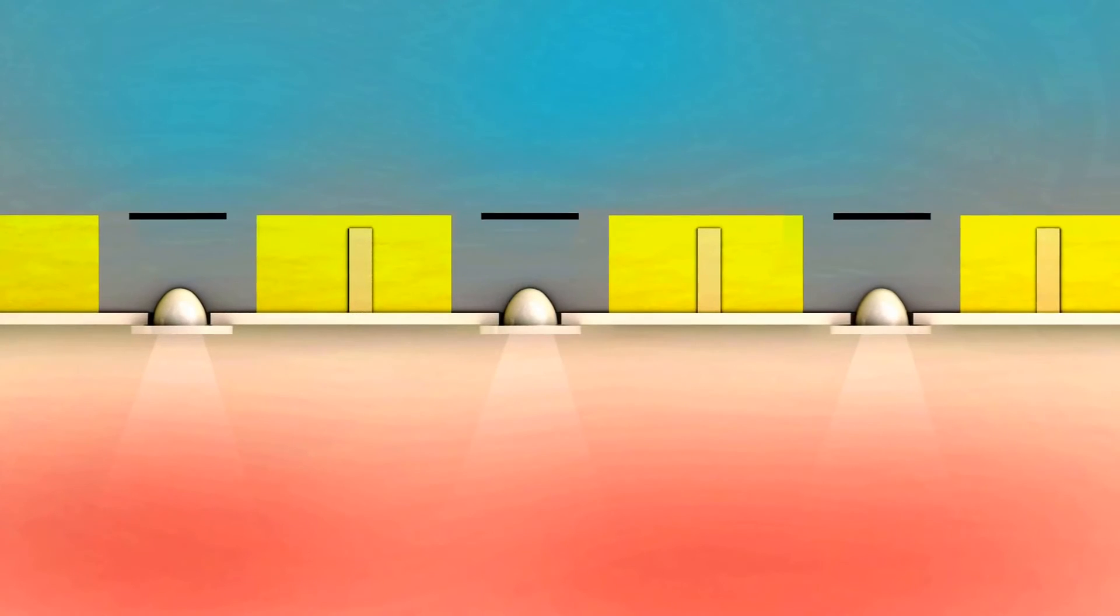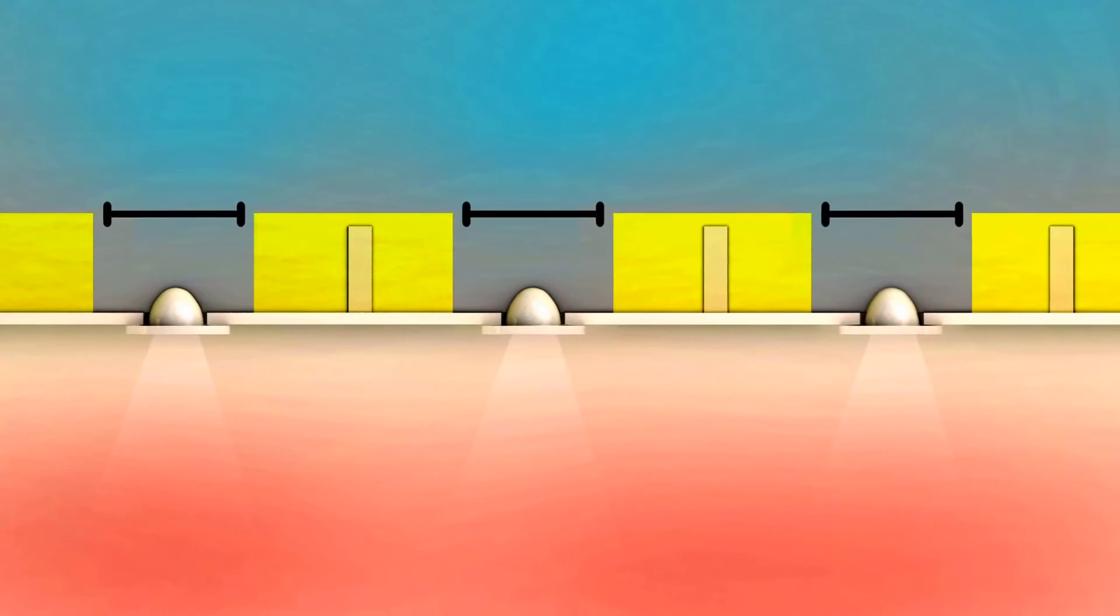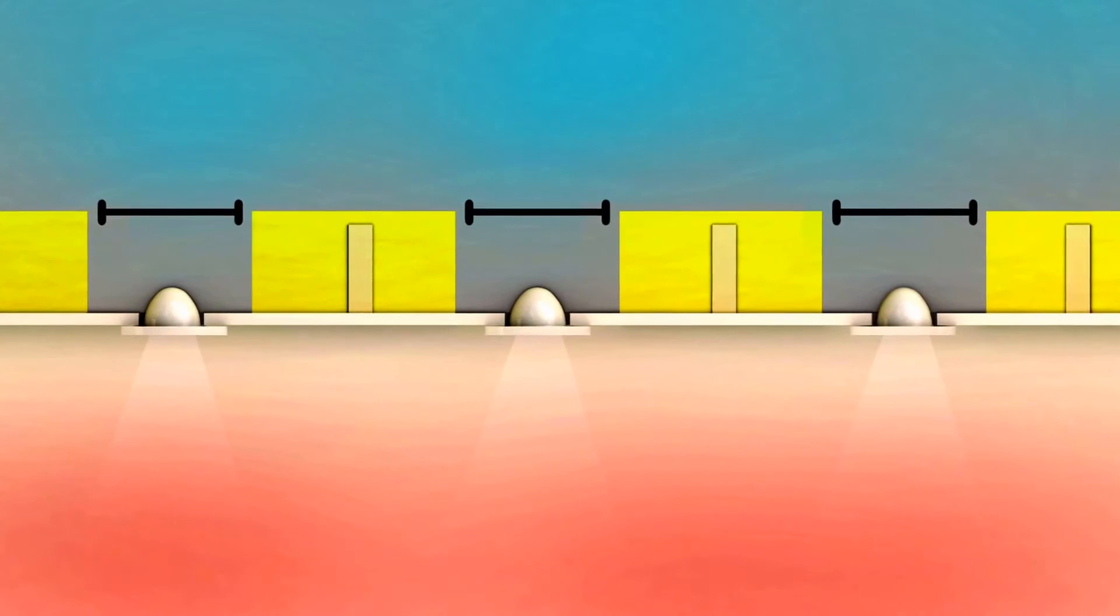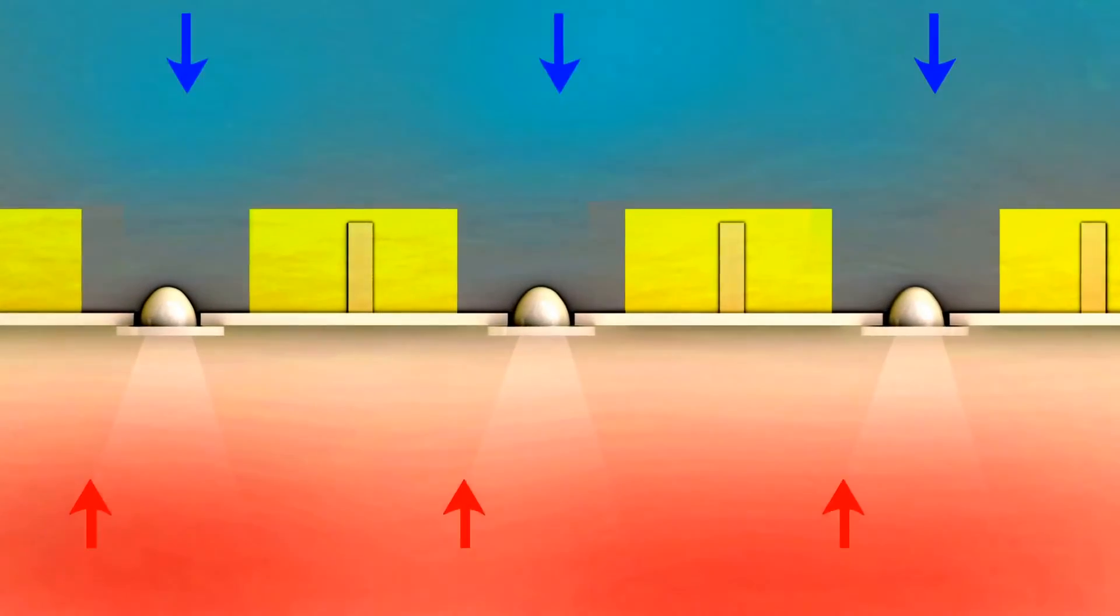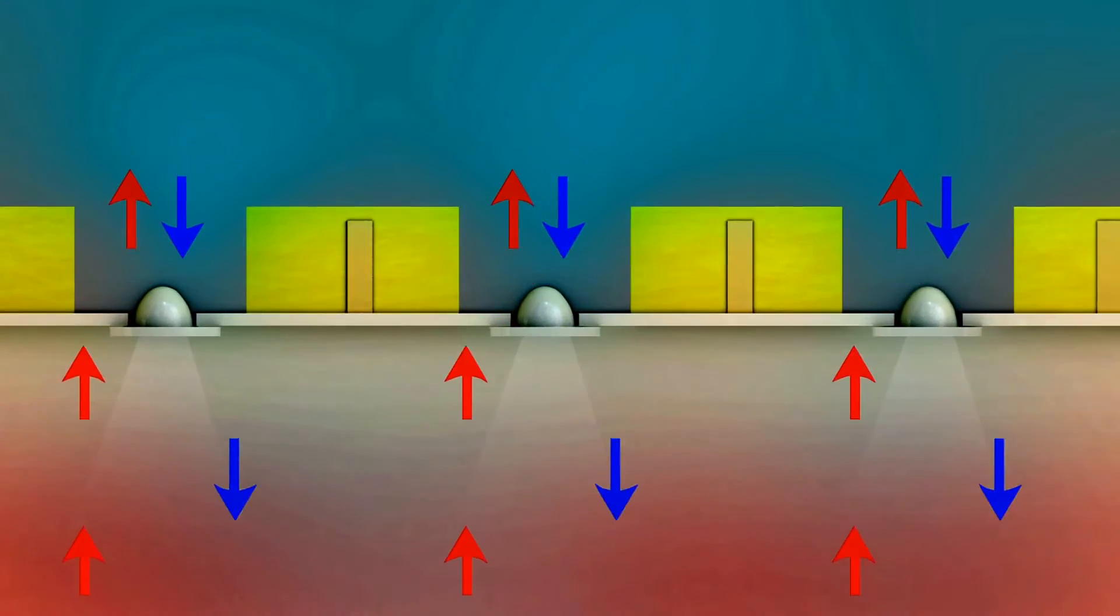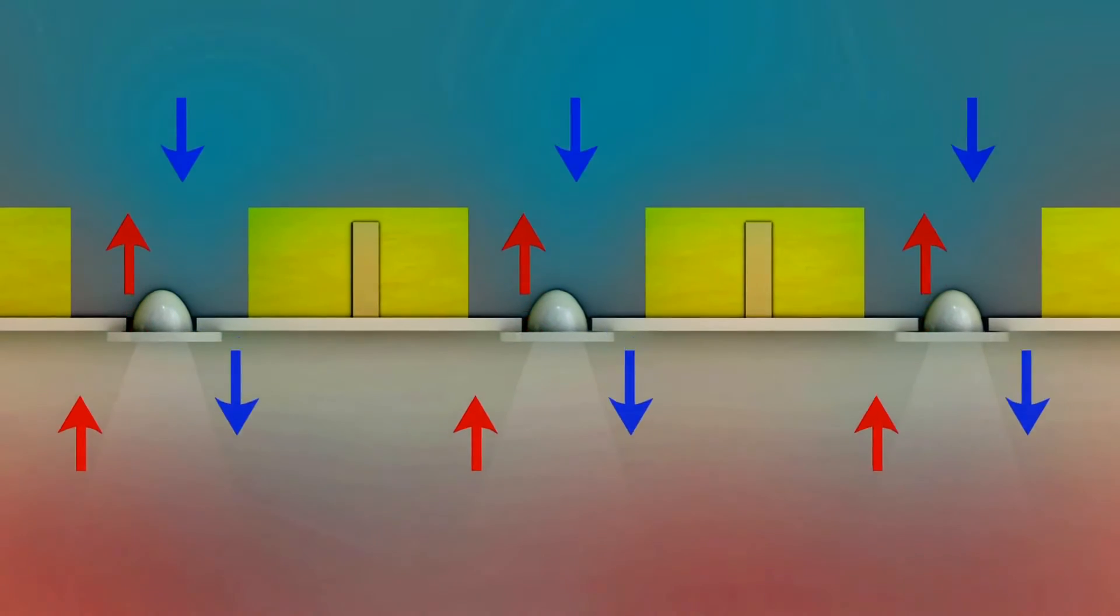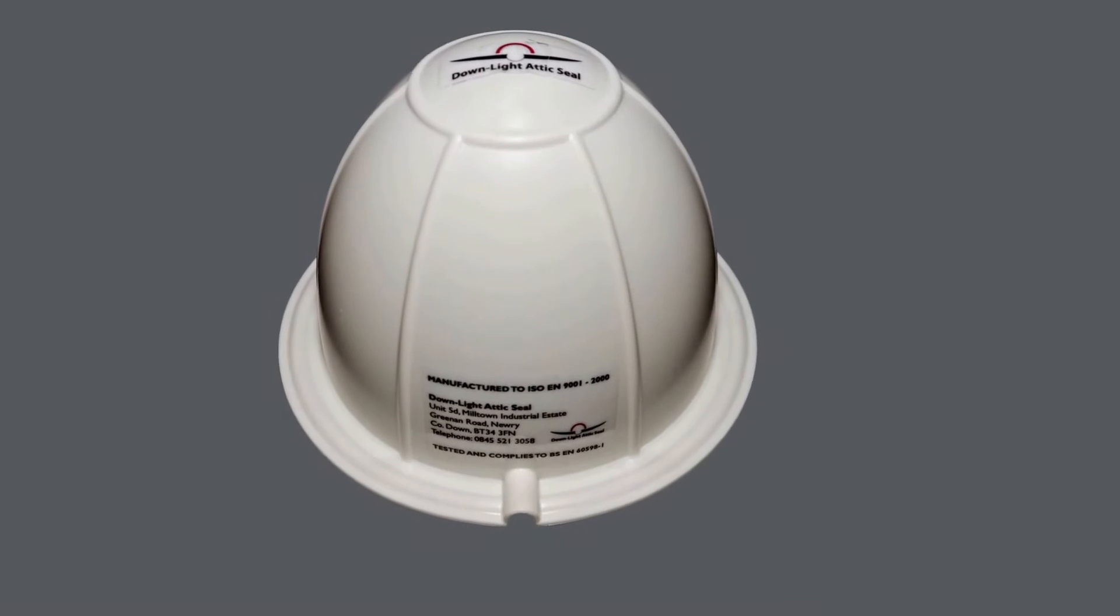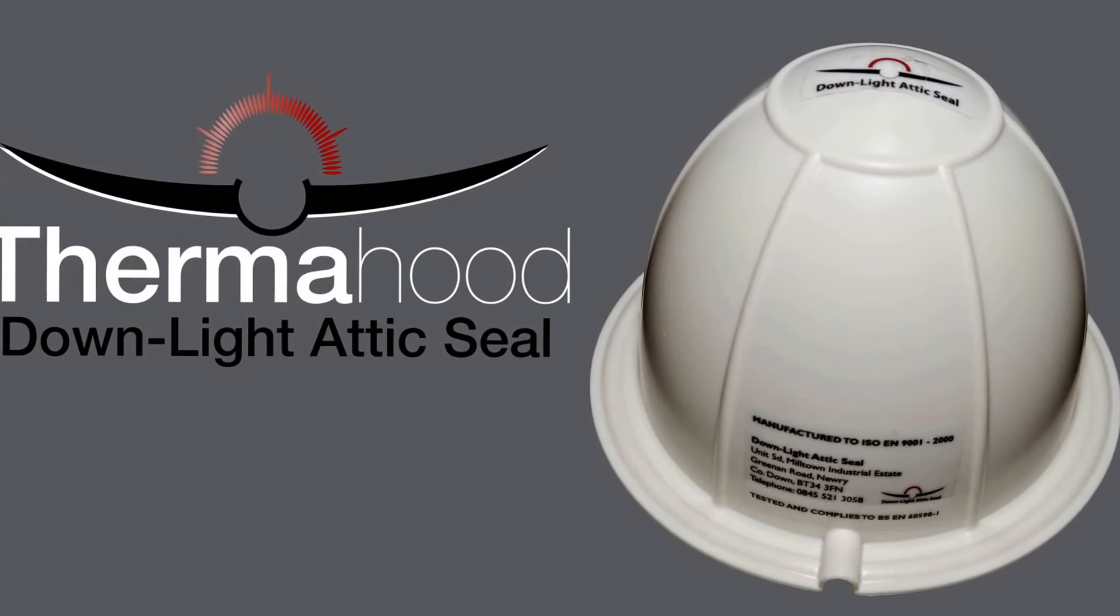As you need to leave a gap in your insulation above each downlight to prevent ceiling fire, the effectiveness of the loft insulation is reduced by up to 30%. Stop this heat and energy loss with the Thermahood downlight attic seal.